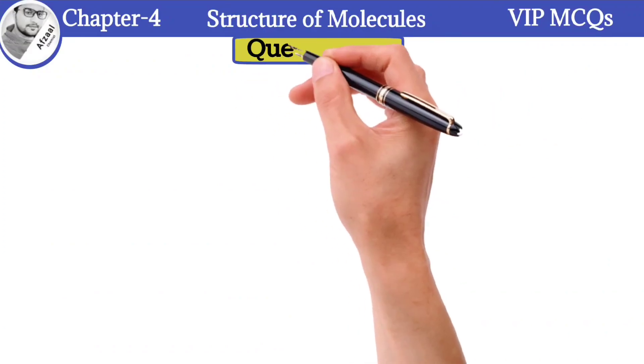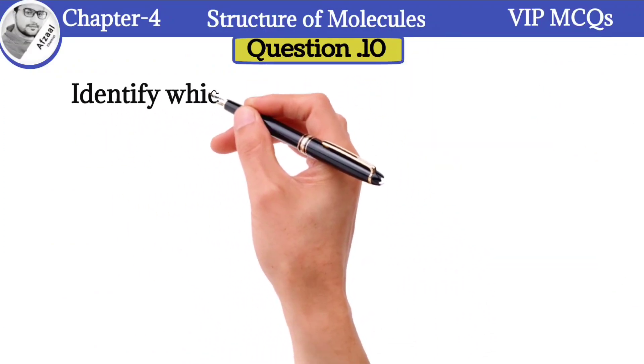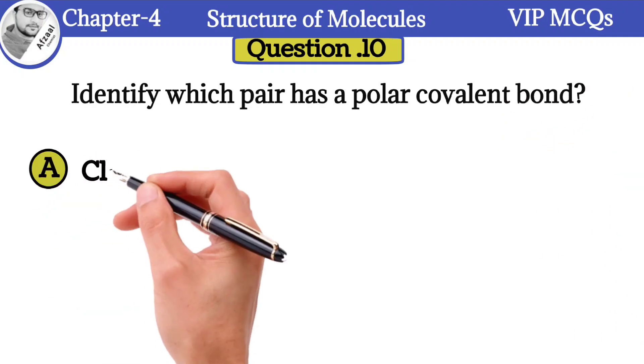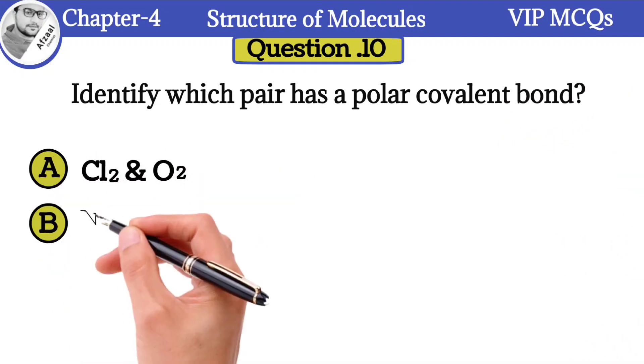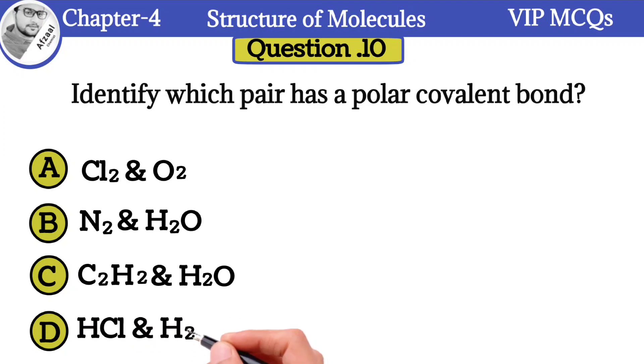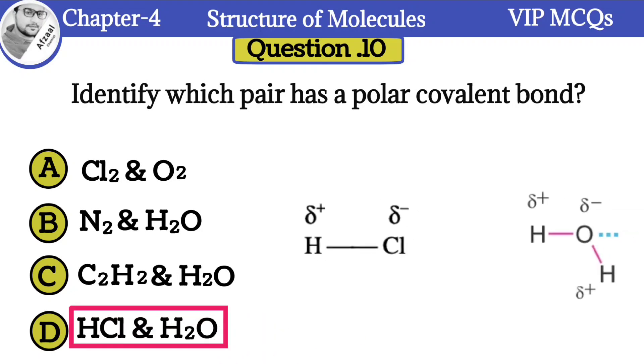Question number 10: Identify which pair has a polar covalent bond: A) Cl2 and O2, B) N2 and H2O, C) C2H2 and H2O, D) HCl and H2O. The correct option is HCl and H2O. Both have a polar covalent bond. Such type of bonds occur in hetero atoms that have different electronegativity.